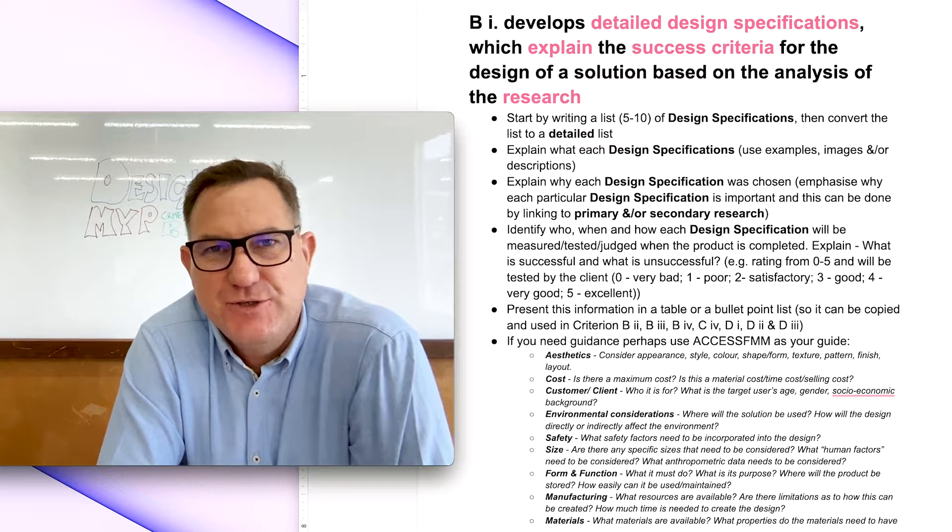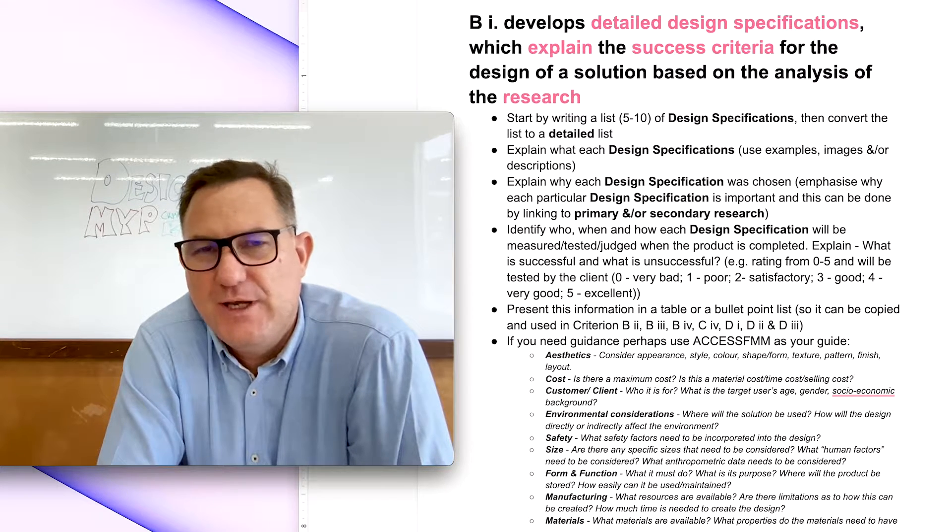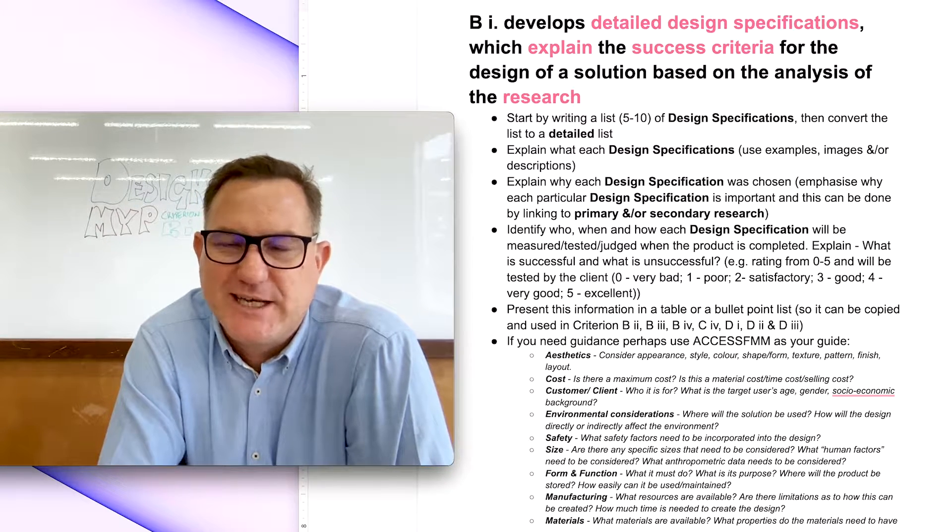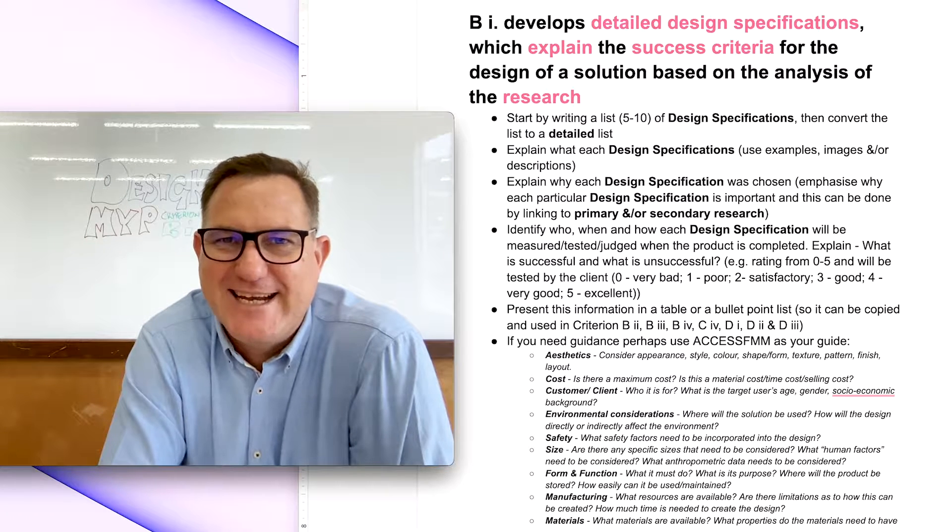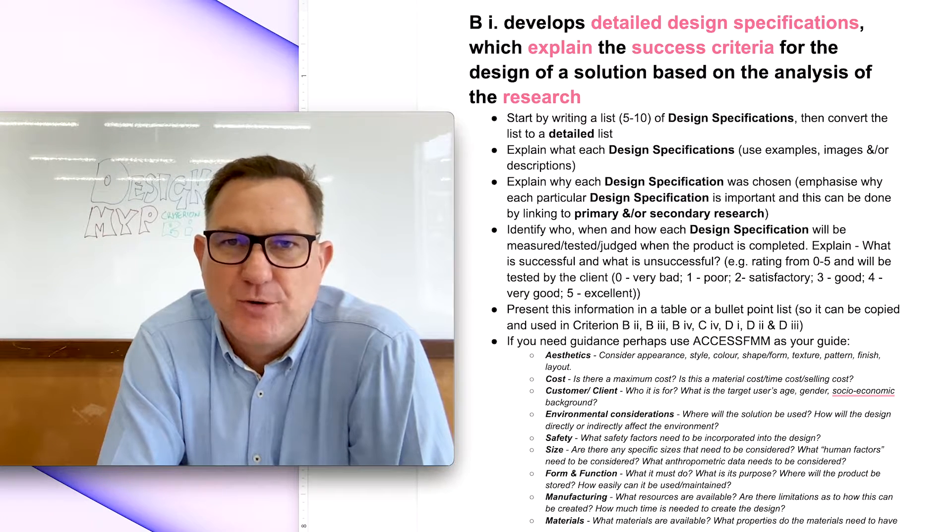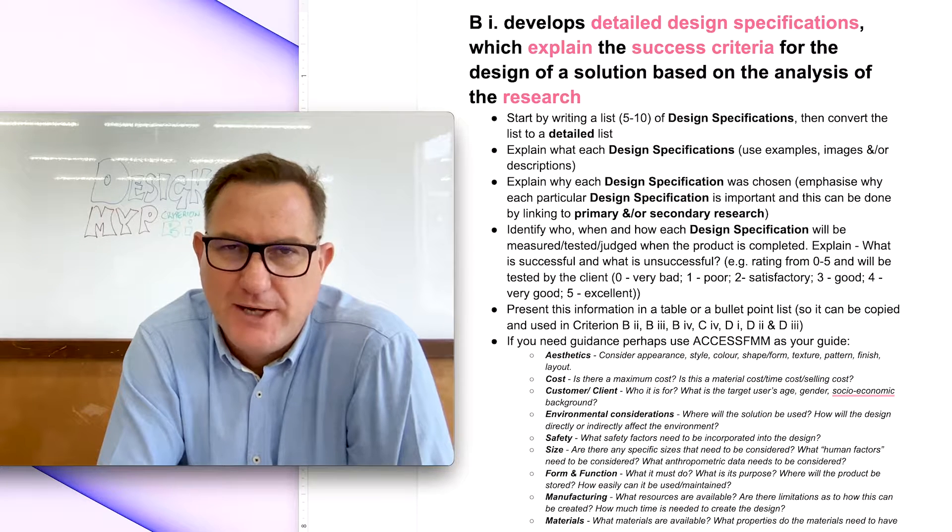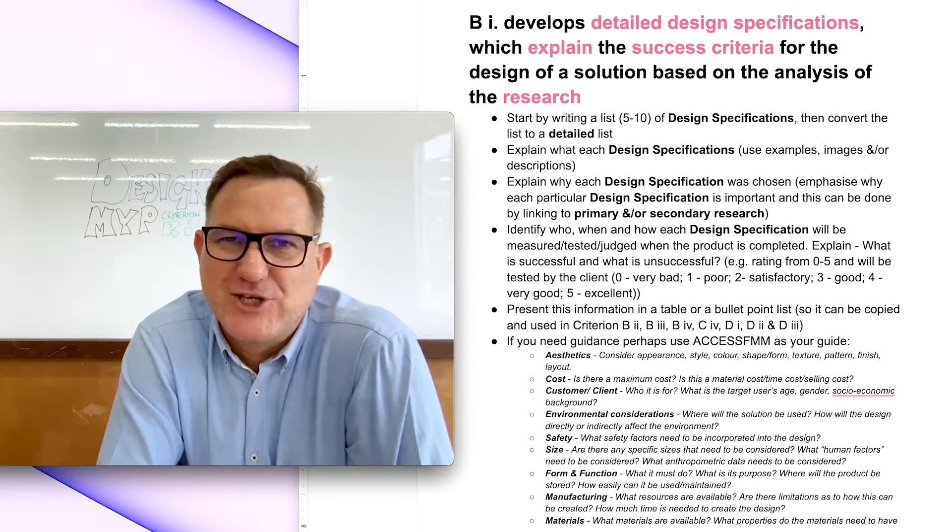This video is for MYP students who are working in design and they're preparing their summative document for Criterion B, and they're wanting to get top marks. They want to get a score of 8 out of 8. So I'm going to talk about what to do for Strand 1, Criterion B Strand 1, so you can ensure that you get top marks.